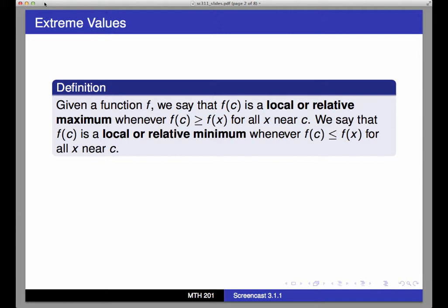So f of c is a local or relative extreme value if it is the highest or lowest point in an area restricted to being close to c. There might be some point where f is higher or lower as we get far away from that point c.